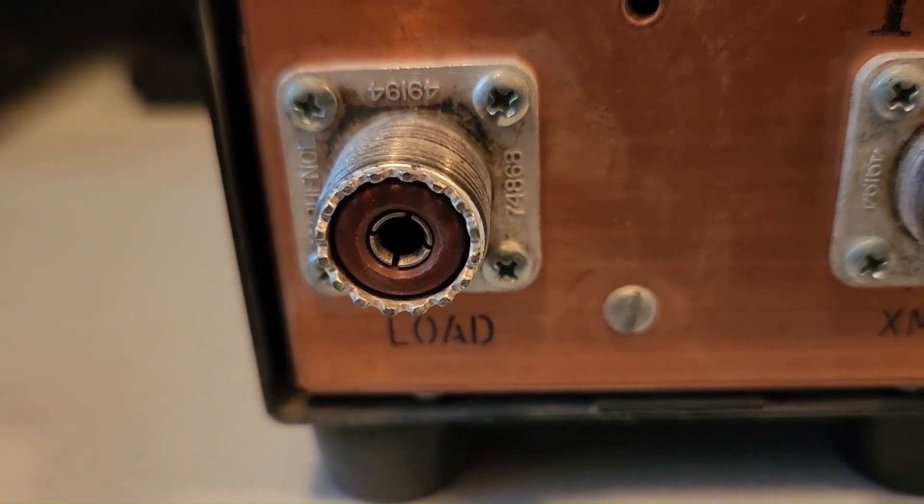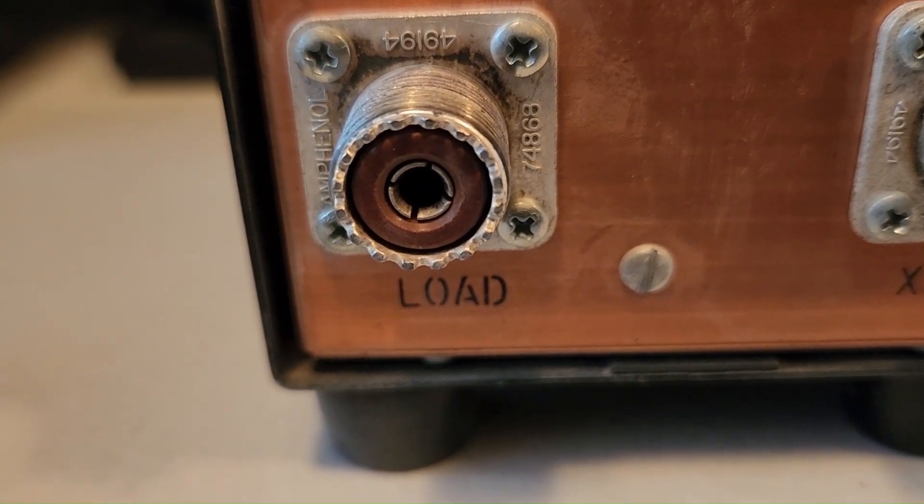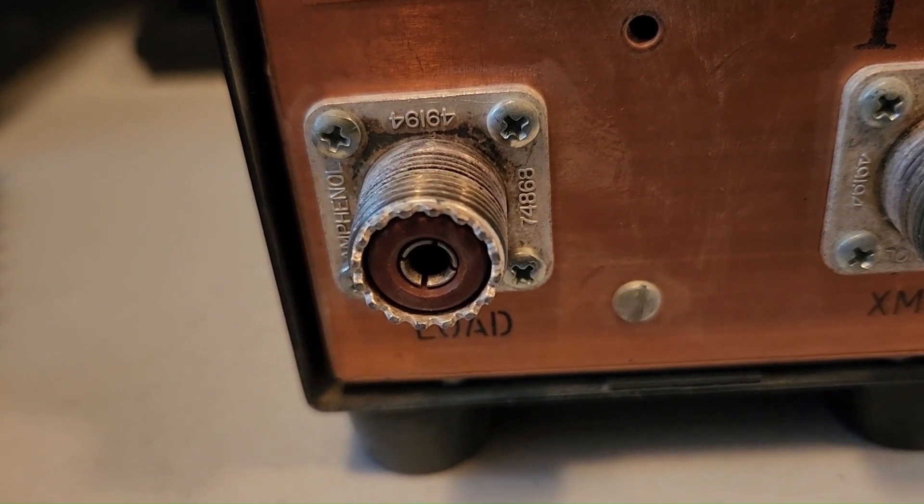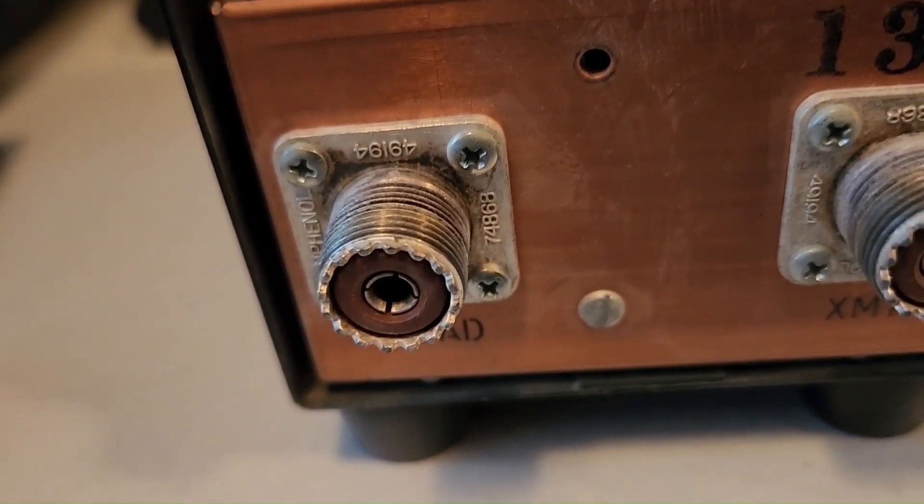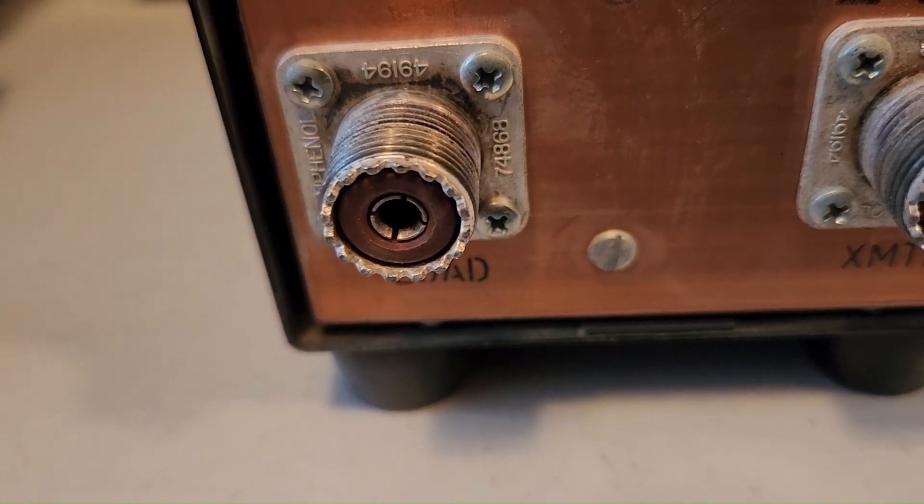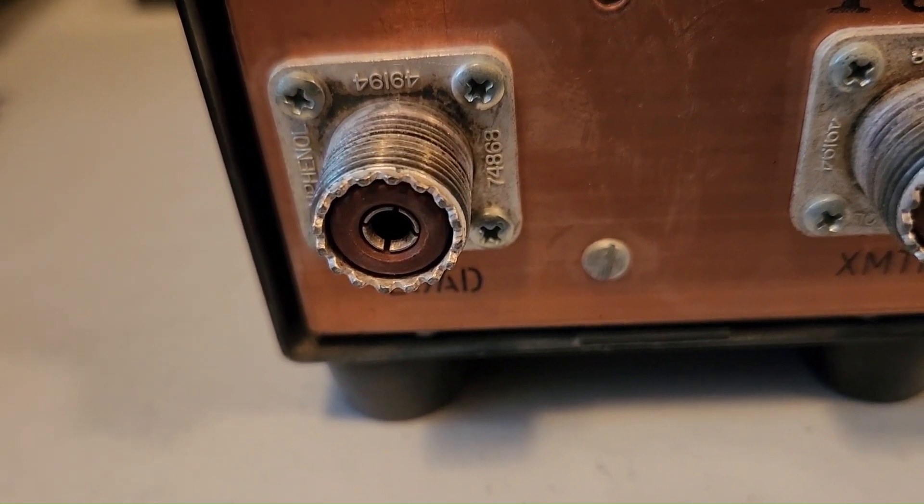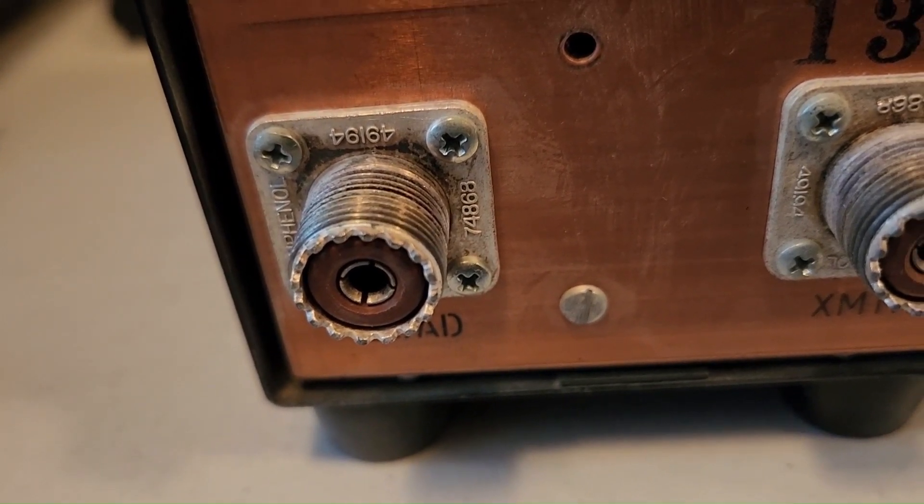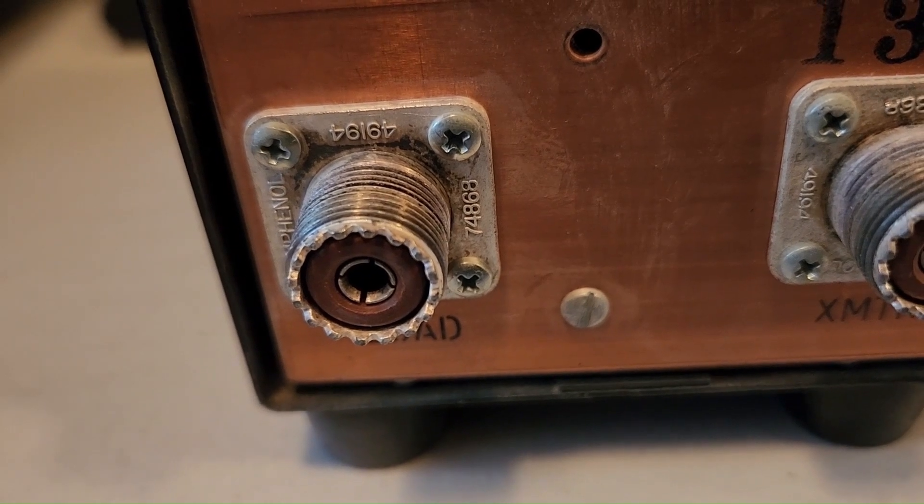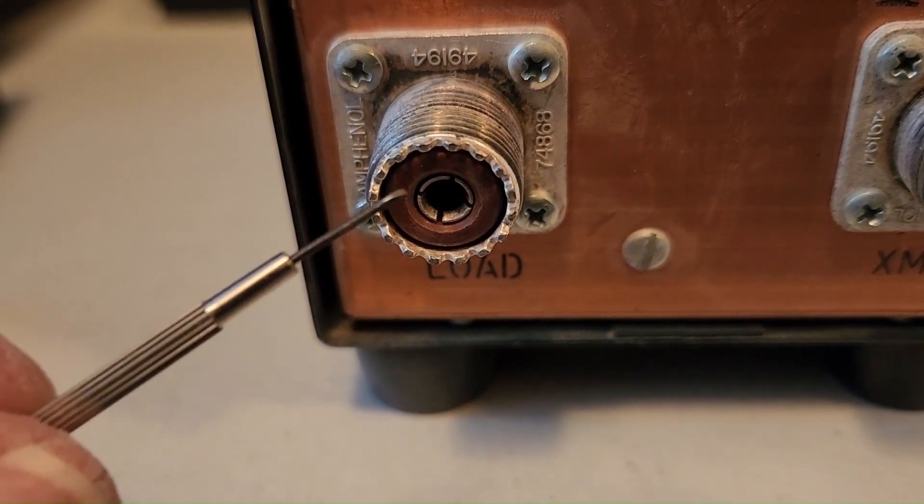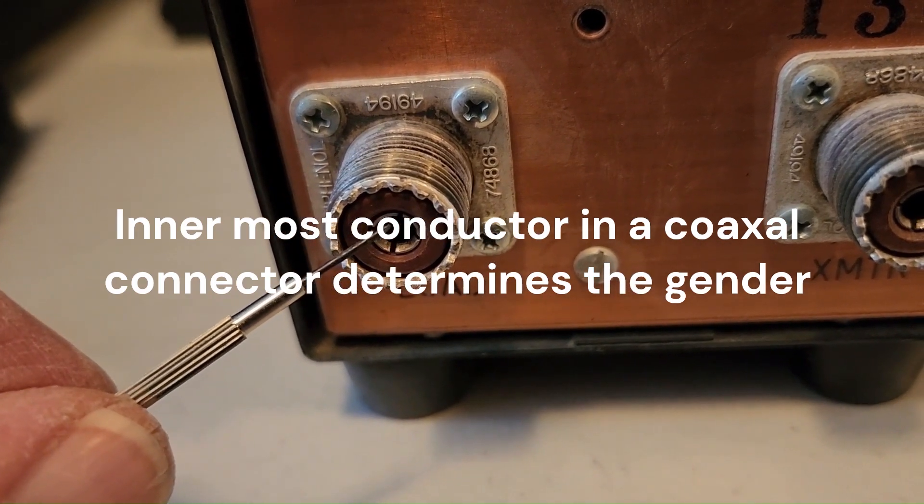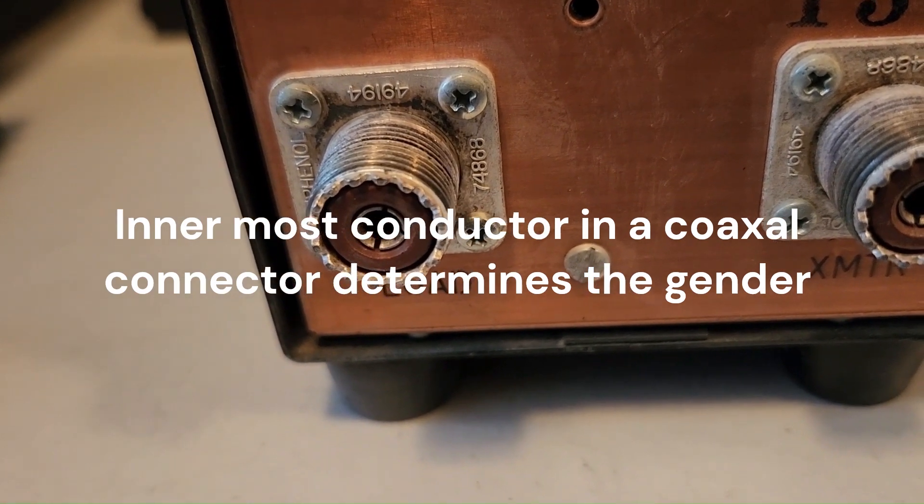Now let's get into the birds and the bees of RF connectors. Many people will look at this SO239 and call it a male because the threads are on the outside. If this was a piece of pipe used in plumbing that would be correct. But with coaxial RF connectors the gender is determined by the innermost conductor. So in this particular case it is a socket and thus this connector is a female.